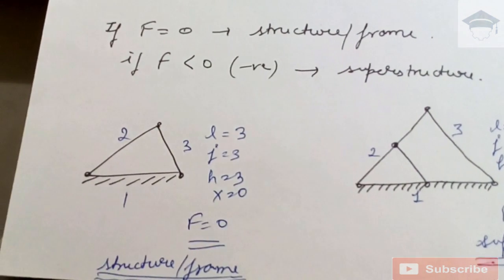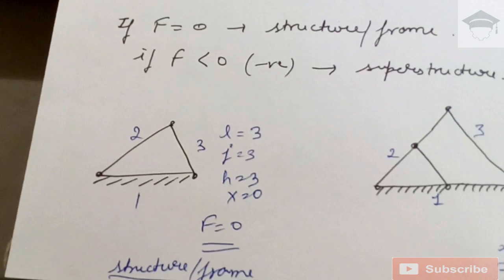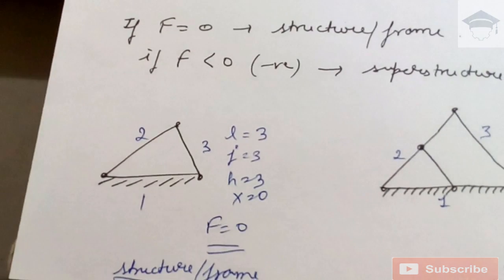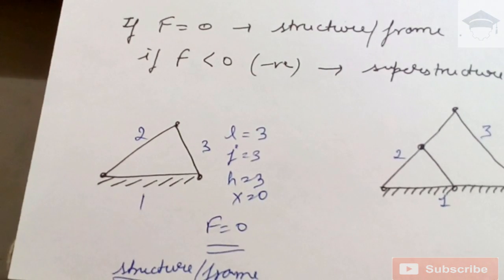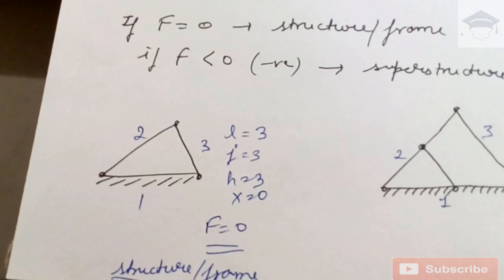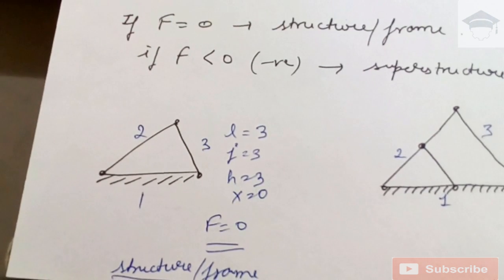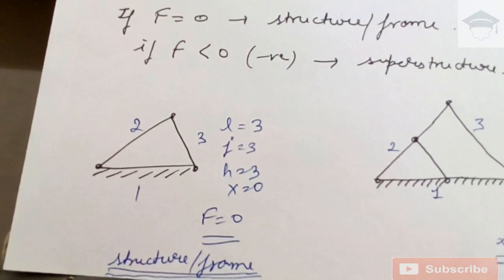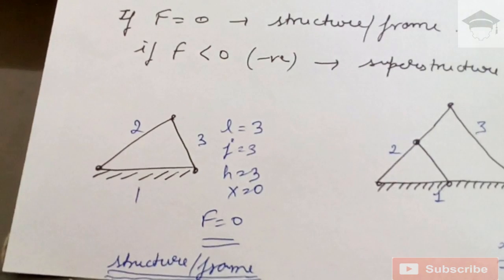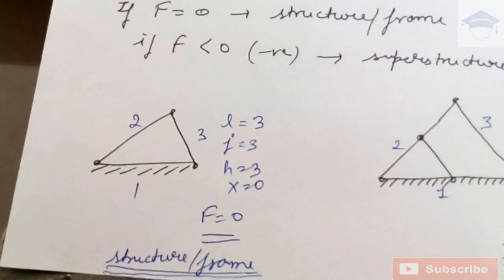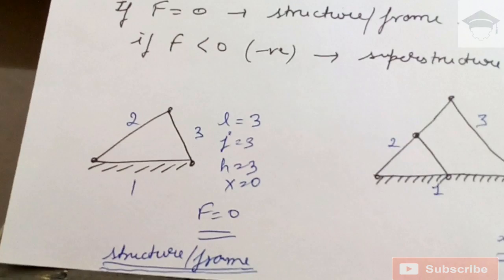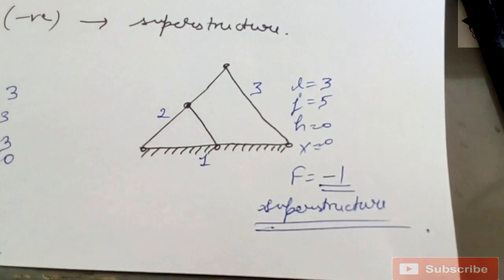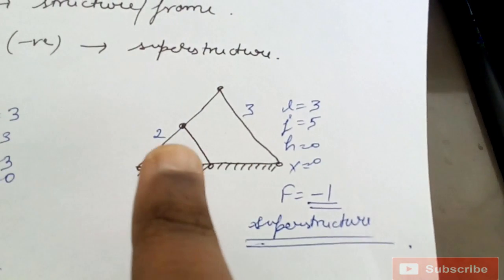Another example: here there are three links. The additional connection shown is not a link — it is just a support joining links one and two. So the number of links is three, but the number of joints increases to five: joints one through five. Higher pair is zero and x = 0. Degree of freedom comes out to be minus one, so this is an example of a superstructure.